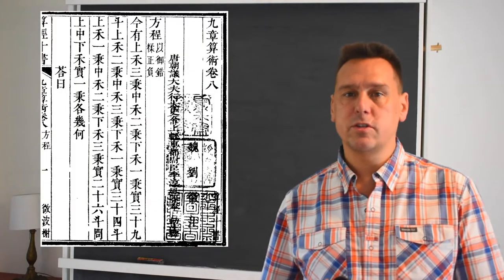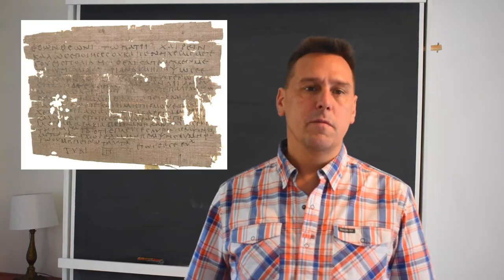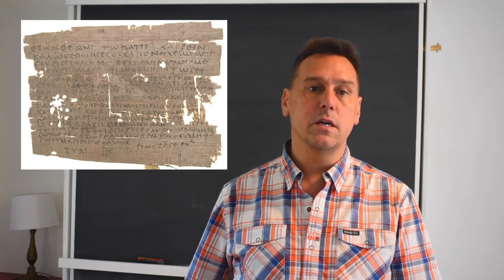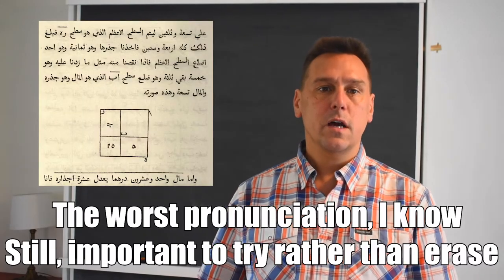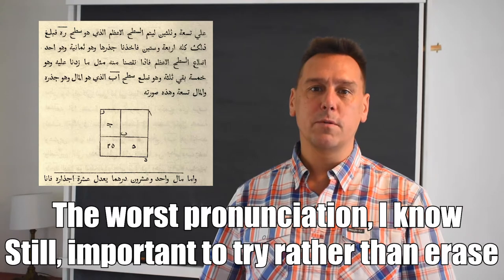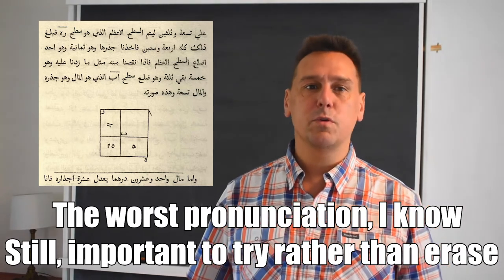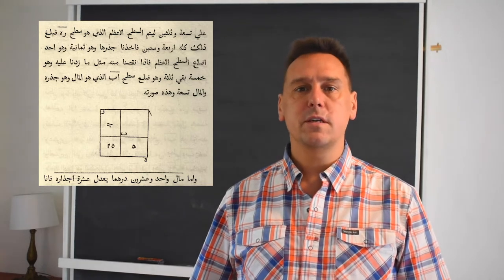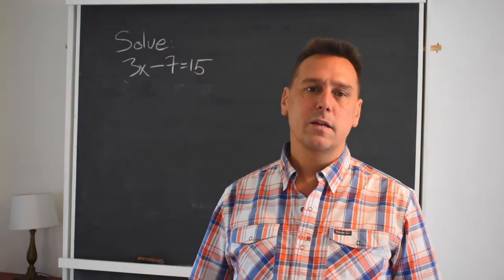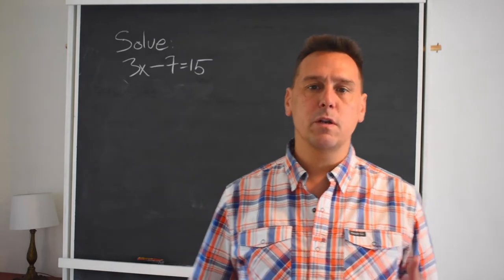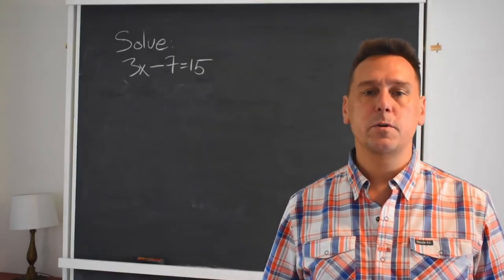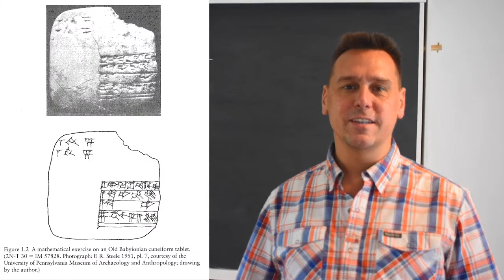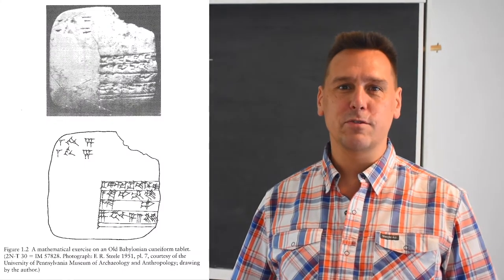There's the Nine Chapters in China sometime before 200 CE, the Bakhshali Manuscript in India sometime before 800 CE, there's Al-Kitab al-Mukhtasar fi Hisab al-Jabr wal-Muqabala, or The Condensed Book on the Calculation of Restoring and Comparing, in 825 CE by Muhammad ibn Musa al-Khwarizmi. And as a final example that we can actually spend a moment with today, I'd like to show you a cuneiform tablet known colorfully as 2N-T30.